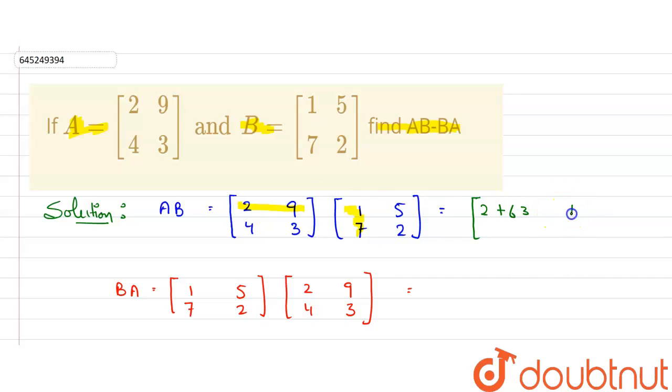Similarly, 2 multiply 5 will be 10. 9 multiply 2 will be 18 here. And now 4 multiply 1, that will be 4. 3 multiply 7, 21. 4 multiply 5, 20. 3 multiply 2, 6. And similarly here also, it will be 2 plus 5 multiply 4, that will be 20.